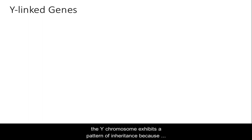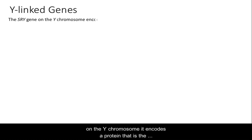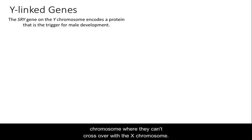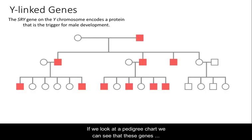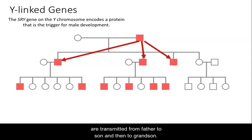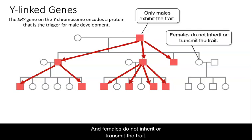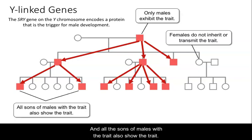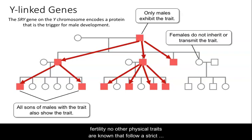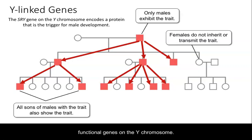In addition to X-linked gene pedigree patterns, the Y chromosome exhibits its own pattern of inheritance due to its association with the male sex. The SRY gene on the Y chromosome encodes a protein that triggers male development. Y-linked genes are present in a unique region of the Y chromosome where they cannot cross over with the X chromosome. Looking at a pedigree chart, these genes are transmitted from father to son to grandson, such that only males exhibit the trait and females neither inherit nor transmit it. Other than maleness itself and some types of impaired fertility, no other physical traits are known to follow a strict Y-linked inheritance pattern, emphasizing the extremely low density of functional genes on the Y chromosome.